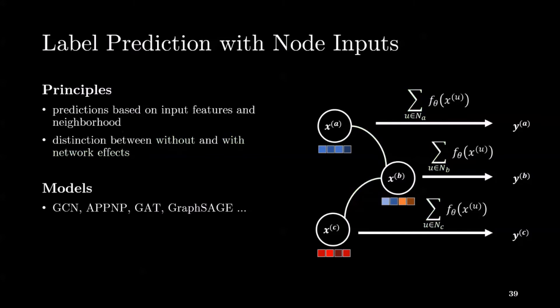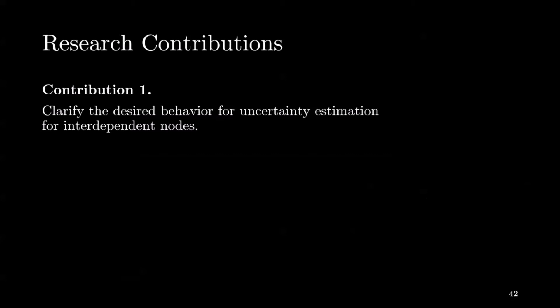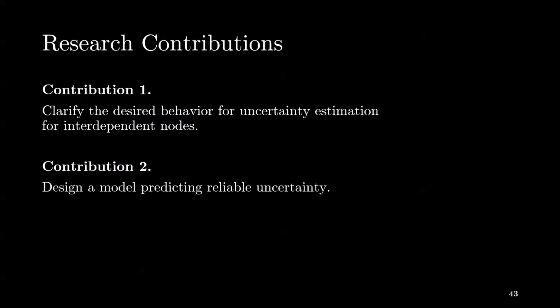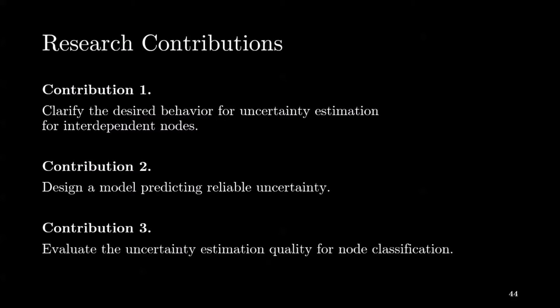For node classification, many models exist like GCN, APPNP, or GAT, but they do not provide reliable uncertainty estimation. Experimental evaluation mainly focuses on standard performance metrics like accuracy with few works on uncertainty estimation. Hence, in our work we make three main contributions for uncertainty estimation for node classification: first, clarifying the desired behavior of uncertainty estimation under various circumstances by proposing three sound axioms; second, proposing a new model called graph posterior network which provably follows our axiomatic approach; and third, an extensive evaluation setup for uncertainty estimation relying on OOD detection and robustness to shifts against feature and edge fluctuations.